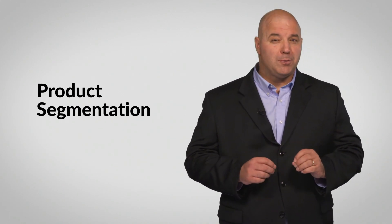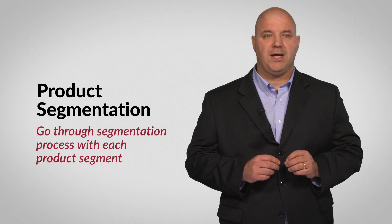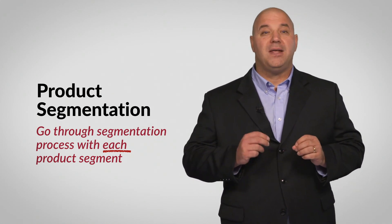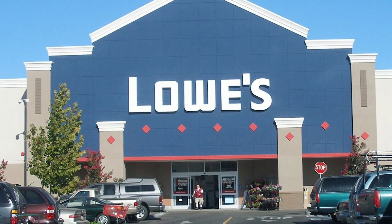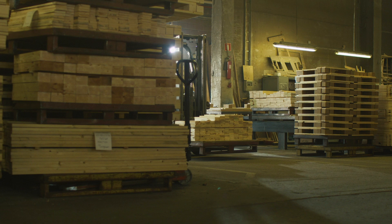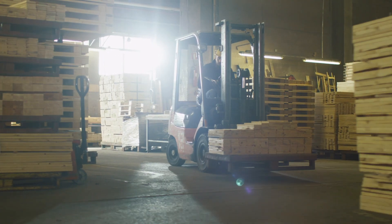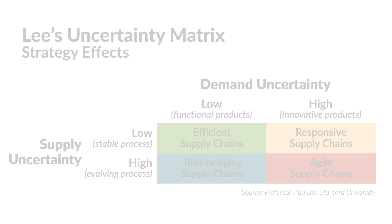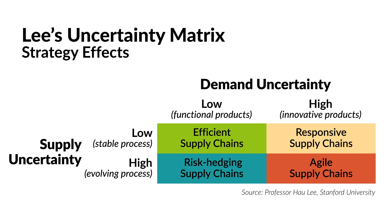If our business has multiple product segments, then we need to go through this segmentation process with each product segment because it will help us identify the type of supply chain strategy we need for the various products. For example, consider Lowe's, a home improvement retailer that sells a wide variety of products. One of their best-selling products is lumber — a functional product that's existed for decades. Lowe's sources lumber from hundreds of well-established suppliers. Therefore, demand uncertainty and supply uncertainty in this category are quite low, and Professor Lee's matrix would suggest that Lowe's use an efficient supply chain strategy.